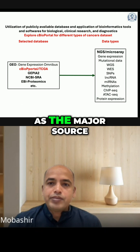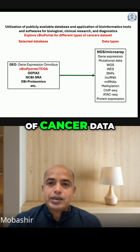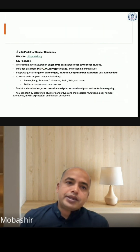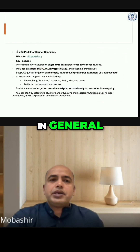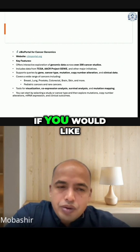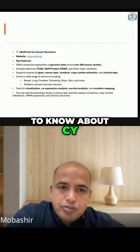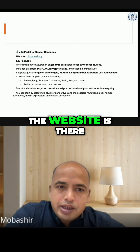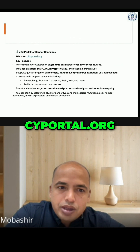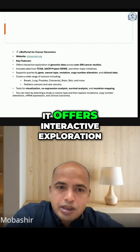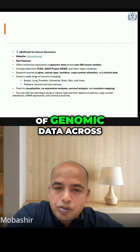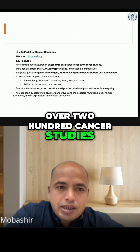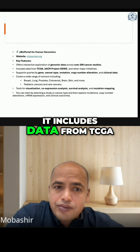In general, if you would like to know about cBioPortal for cancer genomics, the website is cbioportal.org. Key features: it offers interactive exploration of genomic data across over 200 cancer studies, and it includes data from TCGA.